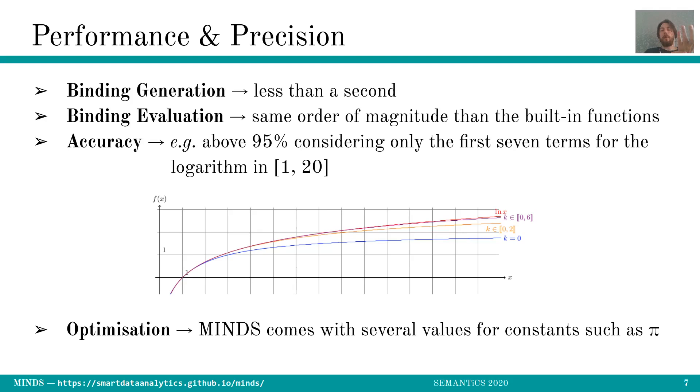The evaluation. So we compared the evaluation of our approximation, our big bindings, with the use of, for instance, building functions. And we ended up having the same order of magnitude to compute the queries, meaning that MINDS and those bindings do not add additional computational times.